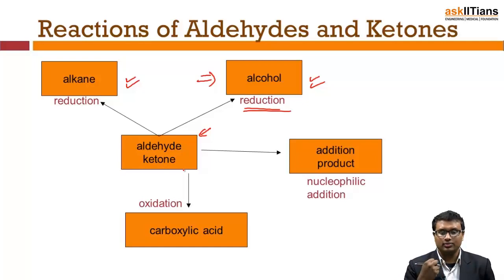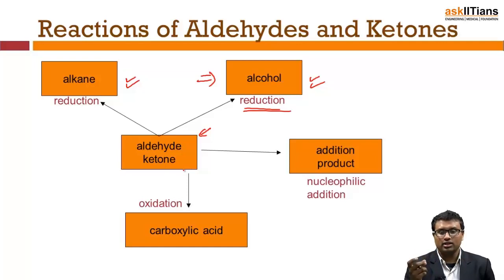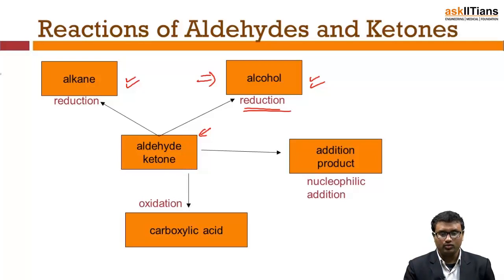Next, aldehydes and ketones undergo oxidation. Oxidation means you are adding oxygen atoms to the existing aldehyde or ketone, which means you will be getting a carboxylic acid. So aldehydes and ketones undergo oxidation to give carboxylic acids.